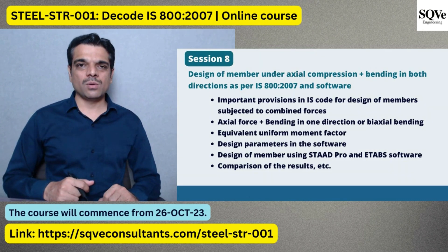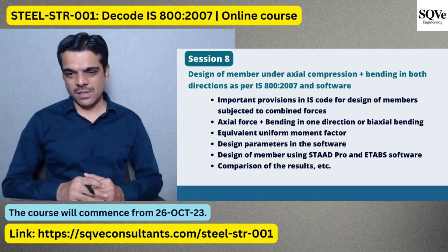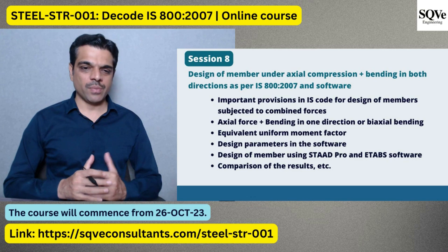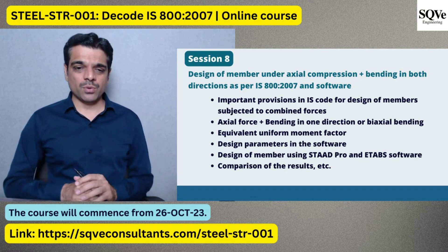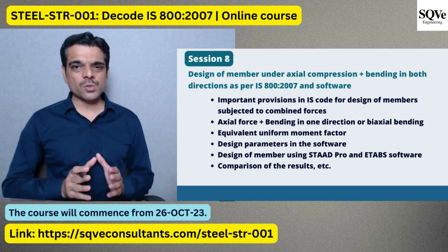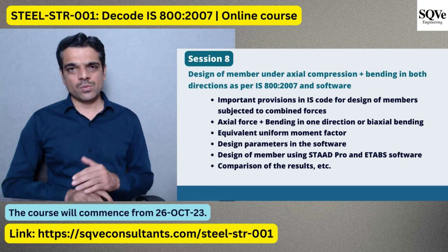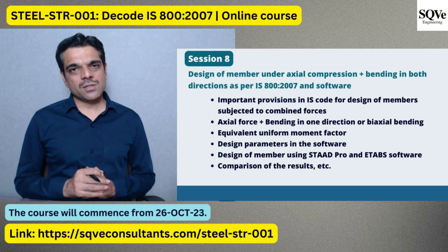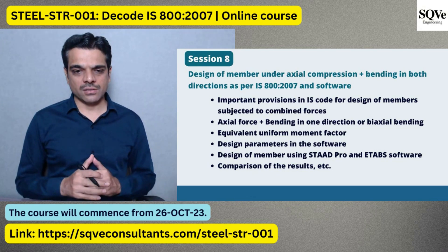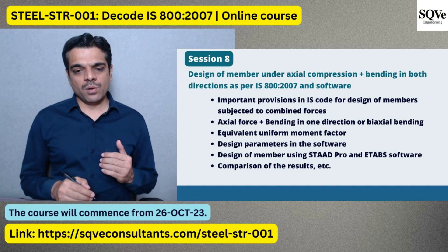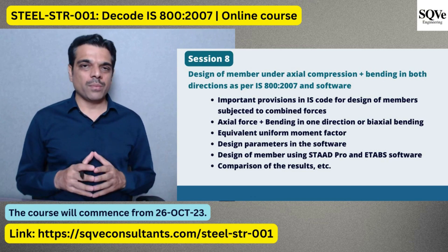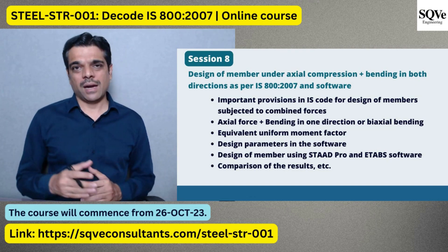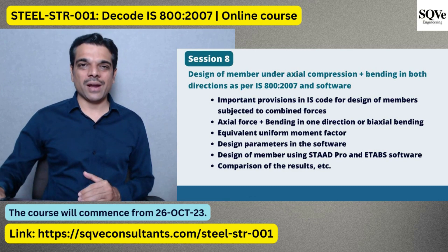The next session covers design of members subjected to combined forces — axial compression plus bending plus shear, and biaxial bending. We will start with important IS code provisions, then discuss axial force plus uniaxial bending and biaxial bending. A key concept to be discussed is the equivalent moment factor in IS code. We will then perform manual design of a couple of members and compare results in StaadPro and ETABS.